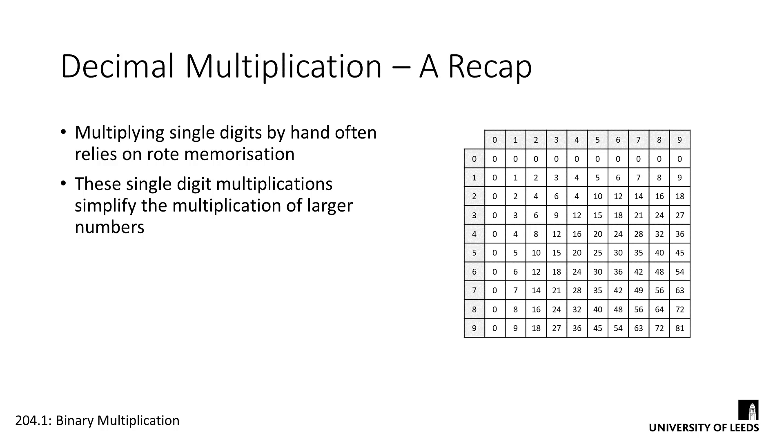We can easily reproduce any combination under ten without writing anything down. We're still adding a number to itself multiple times, it just so happens that we remember the answers to a hundred or so combinations.